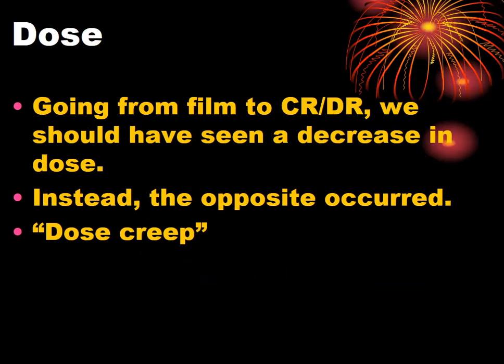When transitioning from film to CR and DR, patient dose should have decreased. Instead, dose creep occurred — mAs was pushed up because technologists didn't understand what the S number (exposure index) meant and didn't realize they were overexposing patients. Early equipment representatives even encouraged technologists to increase mAs by 25–50%. As a result, instead of using less technique, more was used — and the images looked great at high mAs, reinforcing the bad habit.